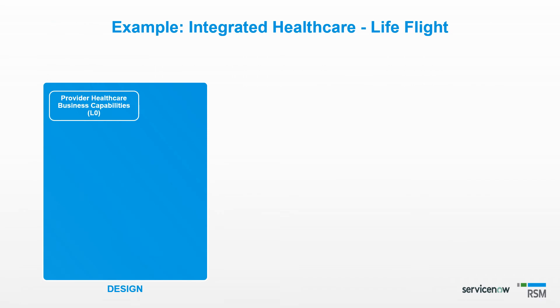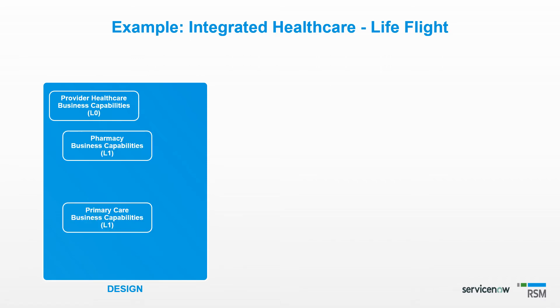Let us look at an example. In this example, we see our level zero business capability as Provider Healthcare. In blue are the business capabilities we already have — it's our current state. In the white box, we see a business capability that many integrated healthcare organizations have, but we do not: a lifelight. This highlights a potential expansion and growth opportunity. This can be flagged or scored, so when we do our strategic planning, we can consider this as an area of potential growth.